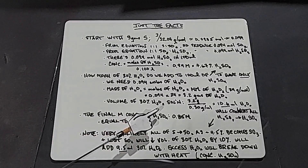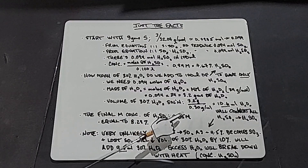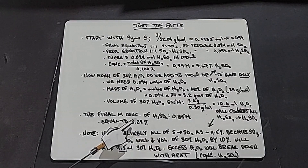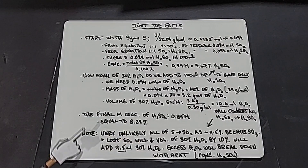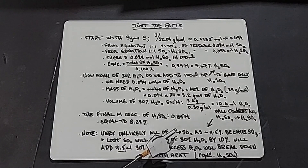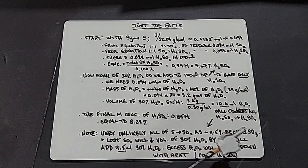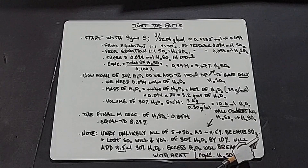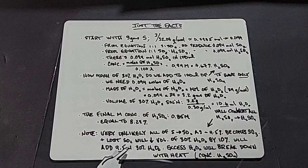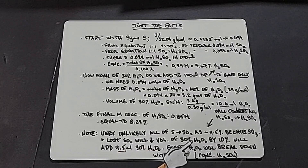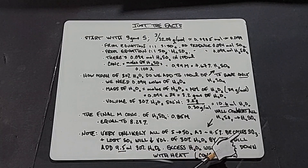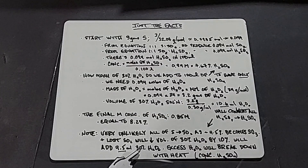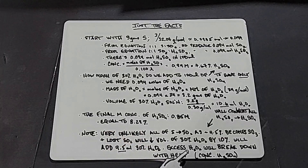The final molar concentration of our sulfuric acid will be 0.85 M, equal to about 8.29%. It's very unlikely that all the sulfur will burn into sulfur dioxide — approximately 4 to 5% becomes sulfur trioxide, plus any lost sulfur dioxide. So I'm decreasing the hydrogen peroxide volume by 10% as a guess, ending up with 9.5 mL of the 30% hydrogen peroxide.